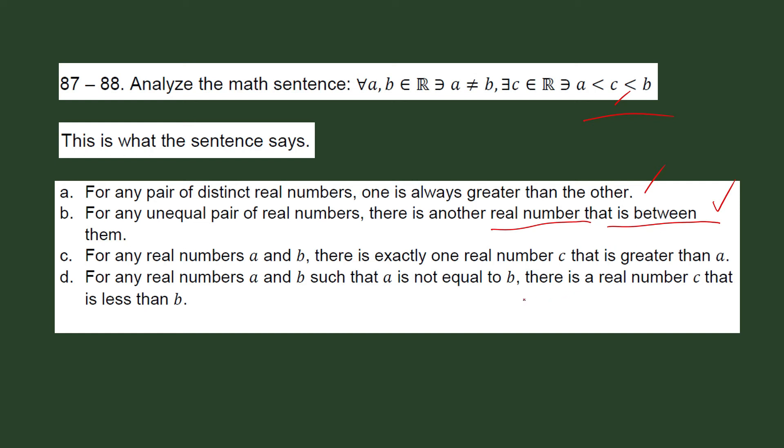But let us check the other choices. For any real numbers A and B, there is exactly one real number C that is greater than A. It doesn't sound right. Okay, because where is B here? And we know the symbol for there is exactly one. So the symbol for that is something like this. There exists and then your exclamation mark. So definitely letter C is not the choice.